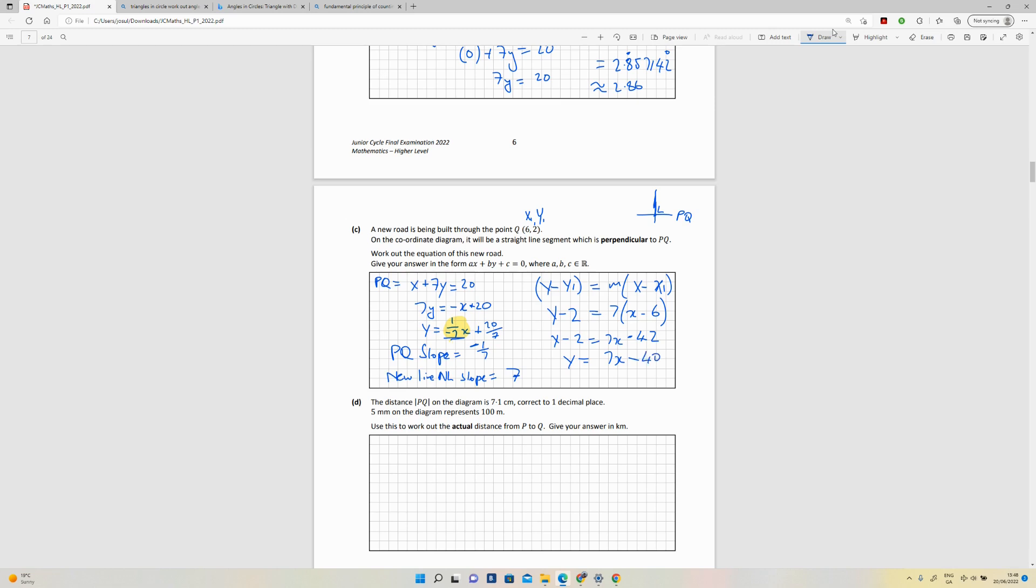So the equation then is 7x minus 40 equals 0 for the equation of the line, new L as I've called it.